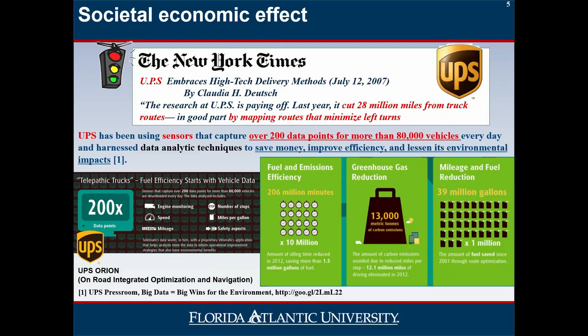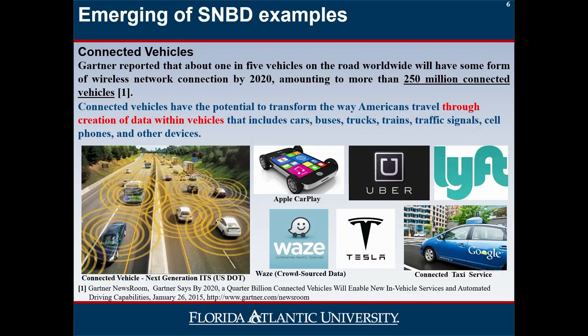Here is an example of Spatial Network Big Data. UPS collected large amounts of data from vehicles and analyzed trajectory patterns. It turns out that if you minimize left turns when driving, you can significantly reduce fuel consumption. Now UPS uses the most cost-efficient route to deliver or pick up packages and saves a lot of money. We can expect that connected vehicles utilize various sensors and produce large amounts of valuable datasets. The question is: how do we collect and analyze this data to provide better service and change the world?